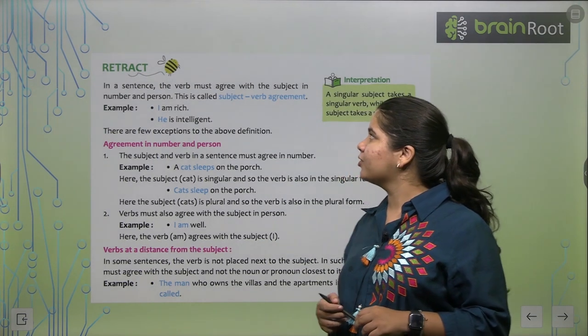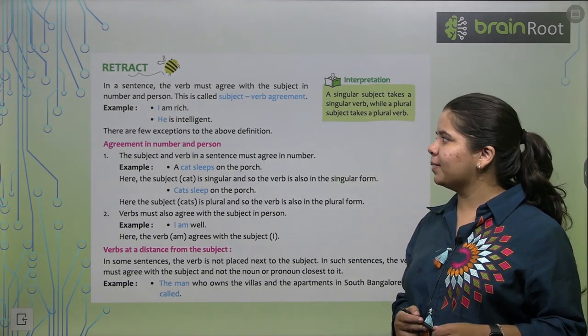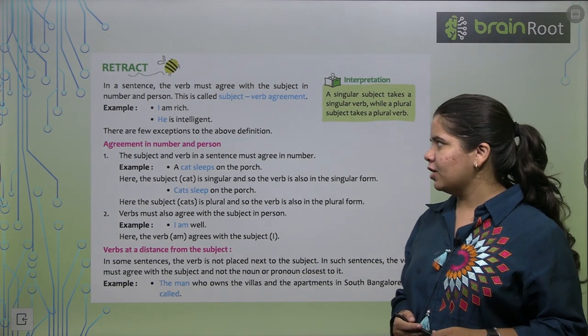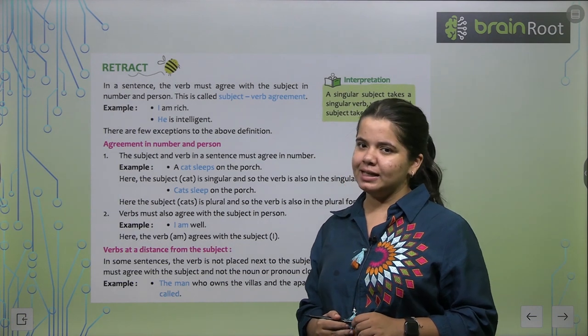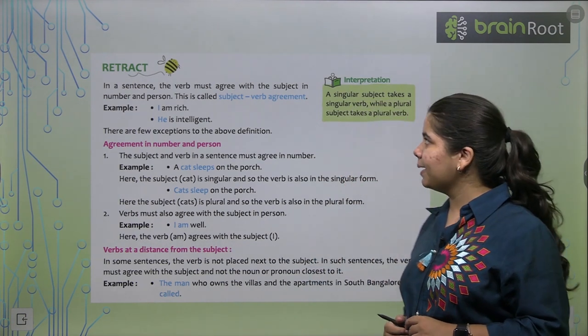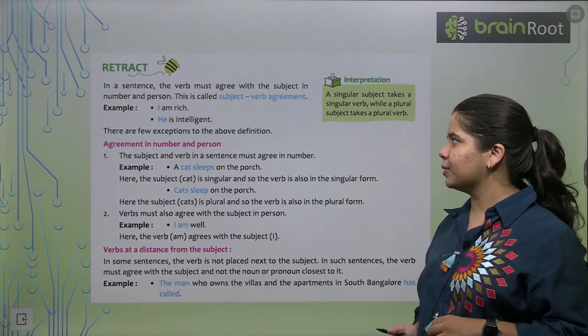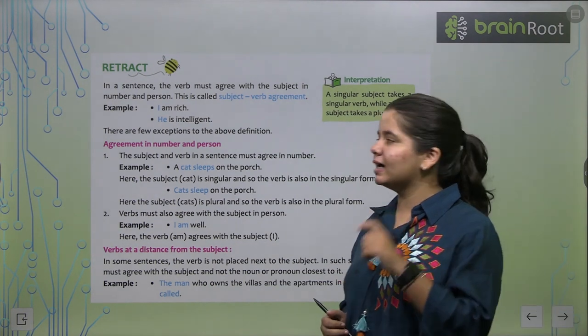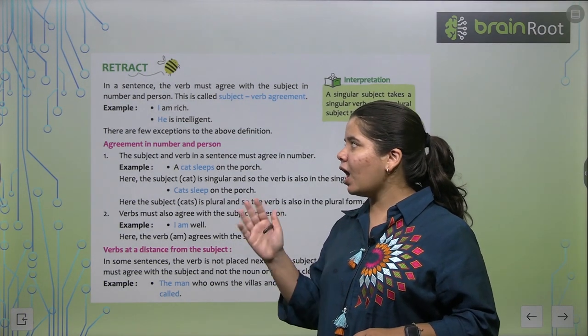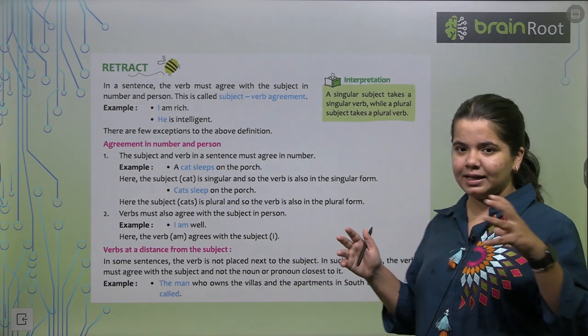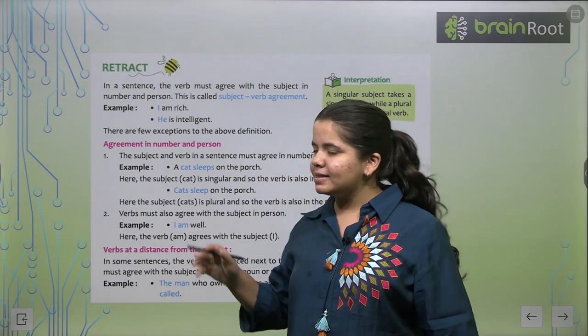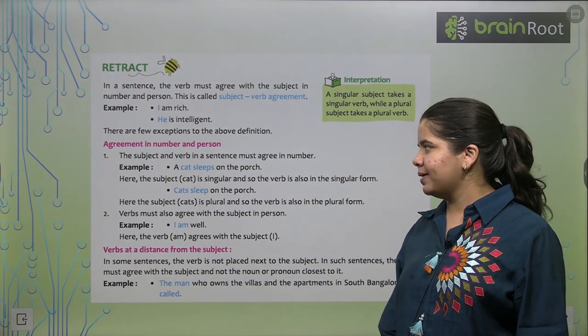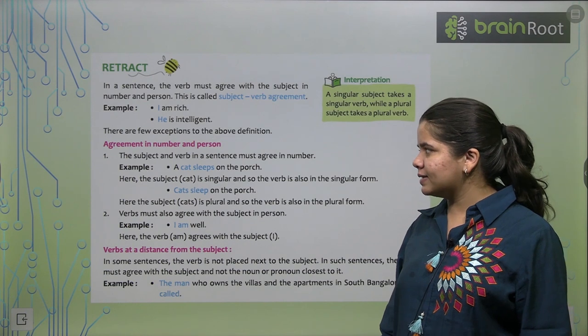In a sentence the verb must agree with the subject in number and person. This is called Subject Verb Agreement. For example, I am rich, he is intelligent. Okay, so what do you need to understand in this chapter? That the verb, the subject we are talking about, we need to agree. There are a few exceptions also.